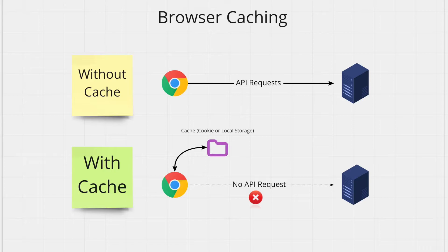Let's start by looking at browser caching. First, say we don't have any cache and your website makes an API call from the front end to fetch some data. Every time a user visits your website, the user's browser will make the API call to get this data. If the user visits your website 20 times in one hour, you'll make 20 API calls, which can get very expensive. Also, making an API call means you're making a call across the network which can always be time consuming, making your website slow.